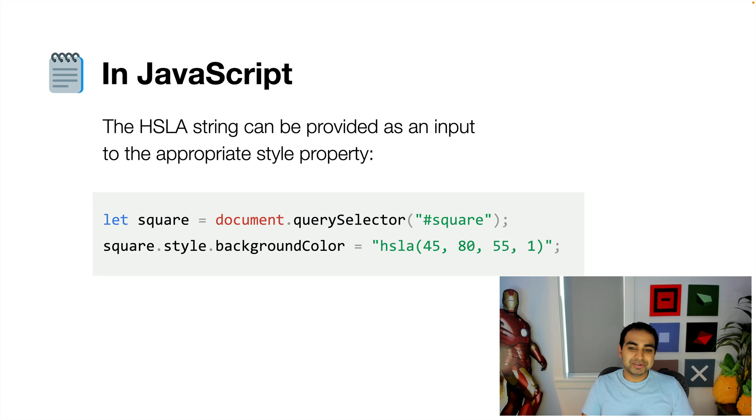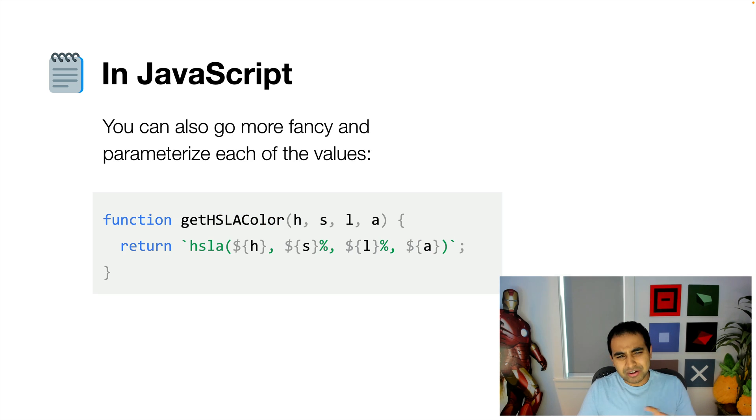Similarly, in JavaScript, you can do exactly the same thing where you can provide the HSLA value as a string to any style property that will support it. And in JavaScript, and also in CSS as well with custom properties, you can go more fancy and parameterize each of the values as well.